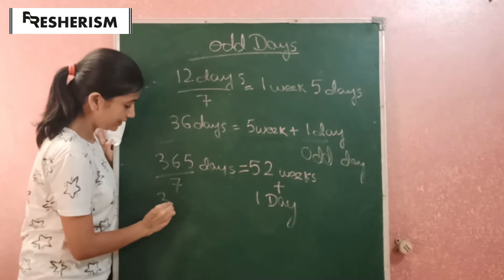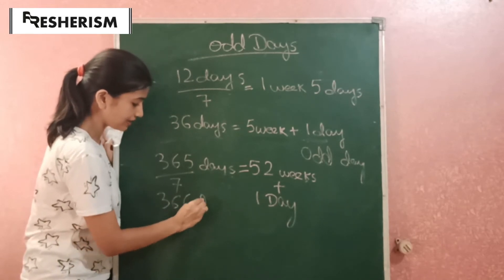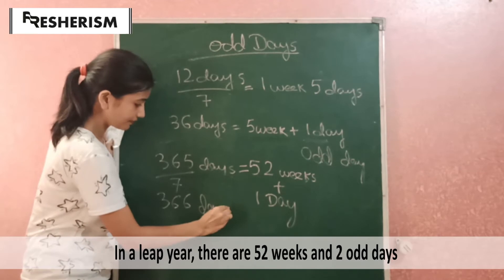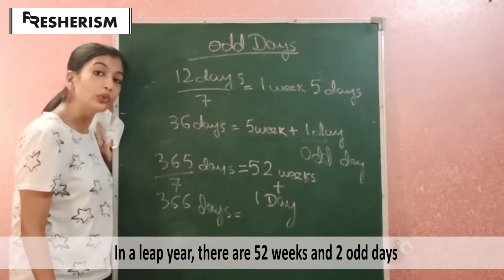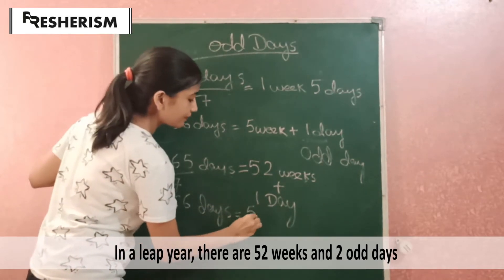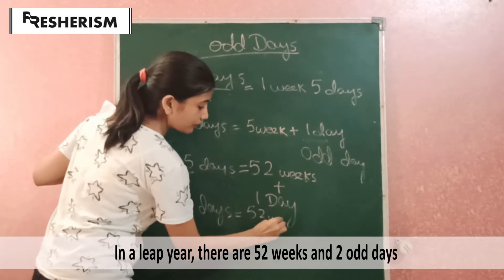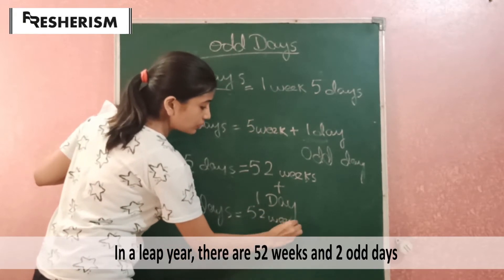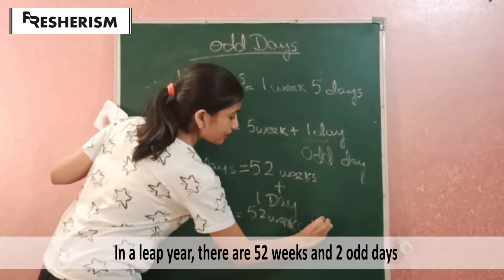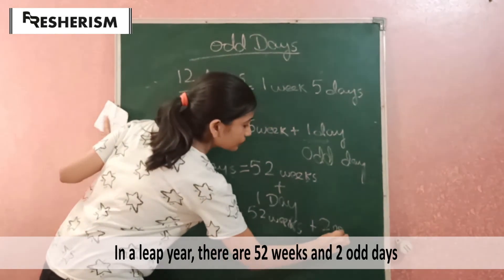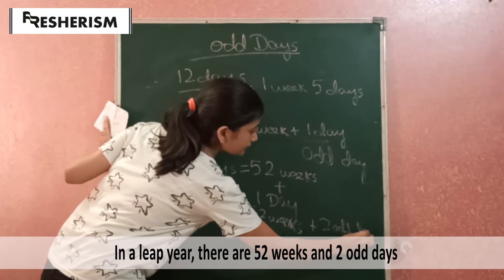But in a leap year — that is, in 366 days — there are 2 odd days. That is, 52 weeks plus 2 odd days.